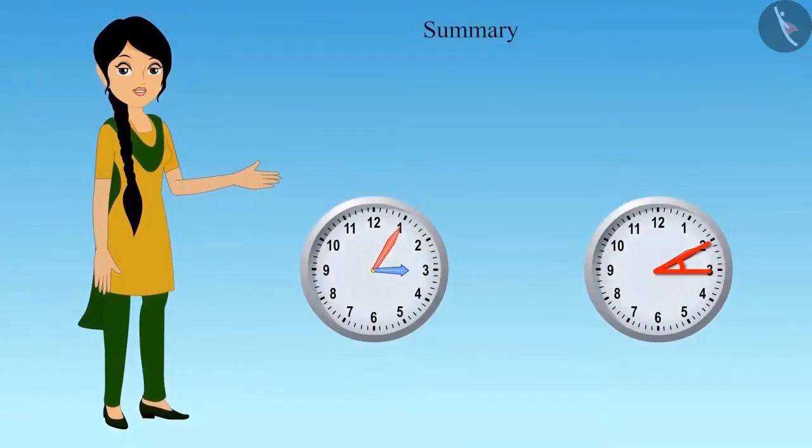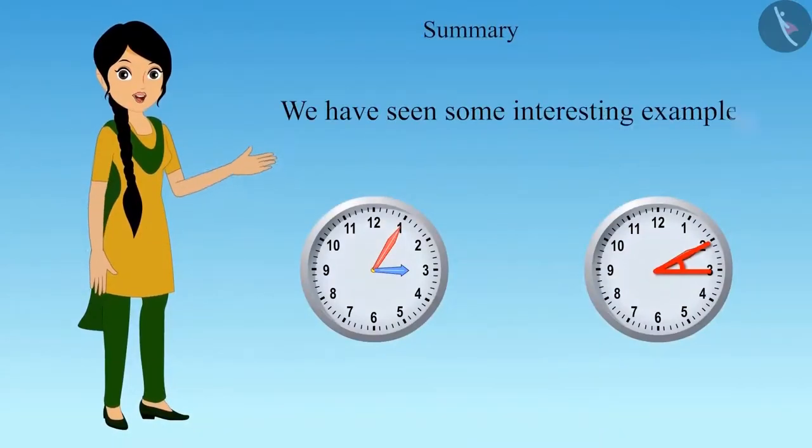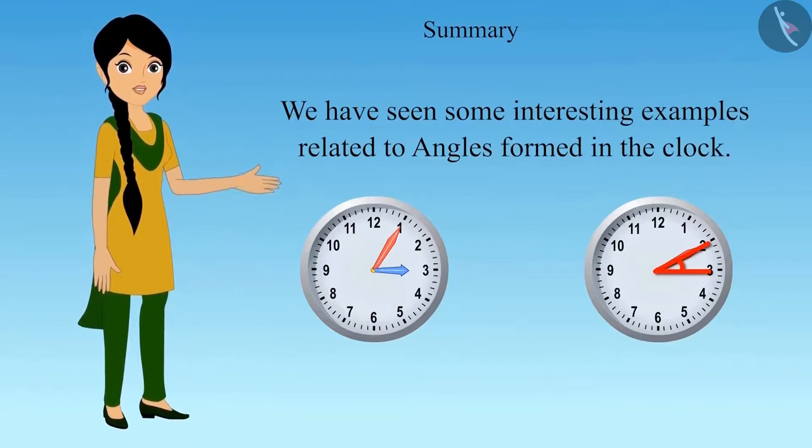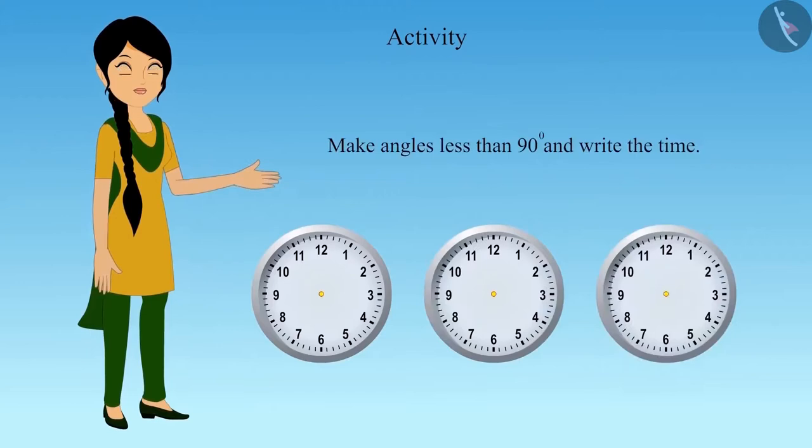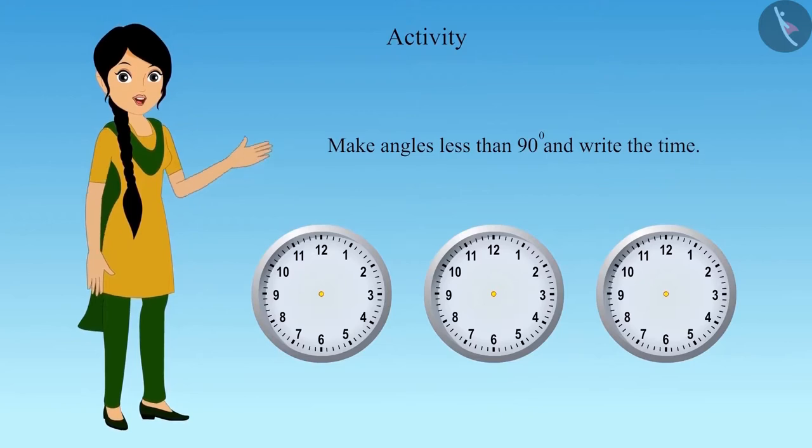So, children, in this video, we have seen some interesting examples related to angles formed in the clock. Now, you make three clocks in your notebook and mark three angles less than 90 degrees in it. Write the time along with it. You can seek the help of your friends and teachers in this activity.